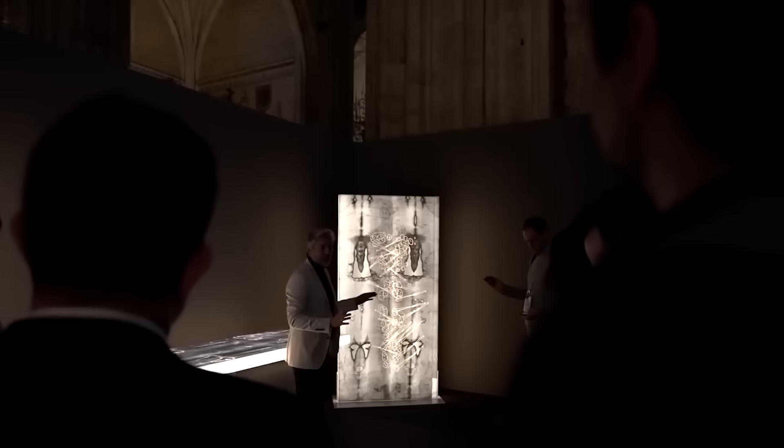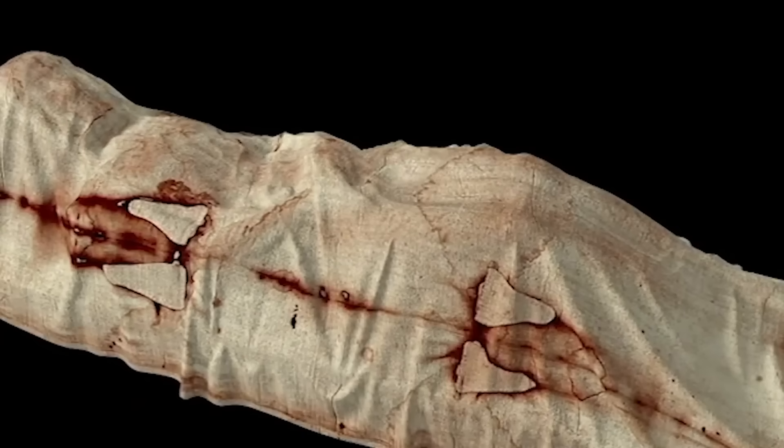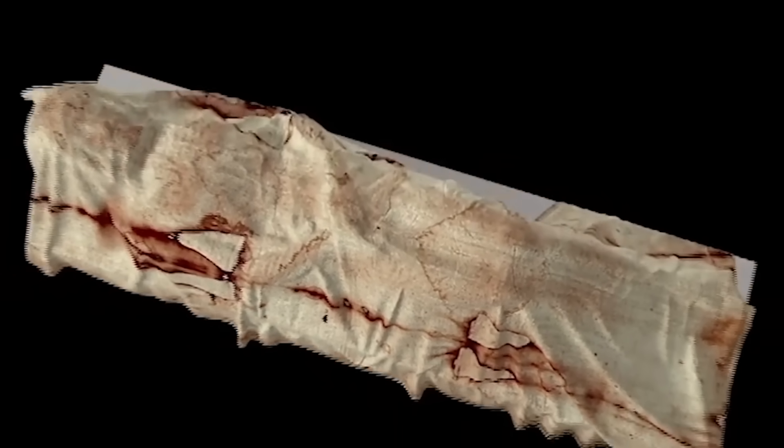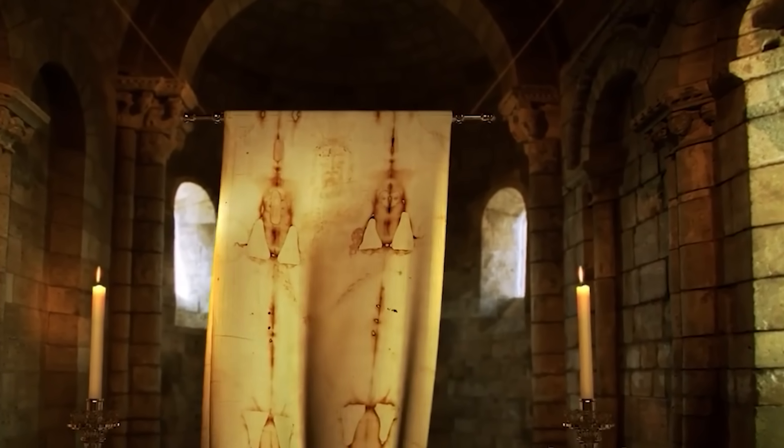Furthermore, the image is unbelievably superficial. It rests only on the topmost microfibers of the linen threads, with a depth of just a few hundred nanometers. For comparison, a human hair is about 80,000 nanometers thick. The color doesn't soak into the cloth like paint or dye. There are no brush strokes, no directionality. It's more like the fibers themselves were chemically altered in a way that produced the color.